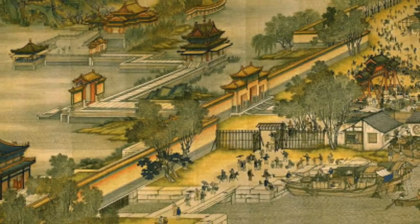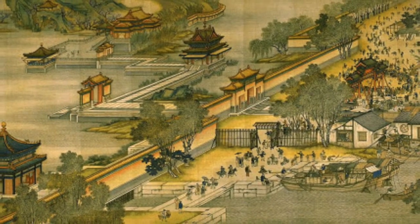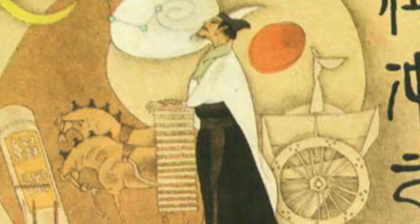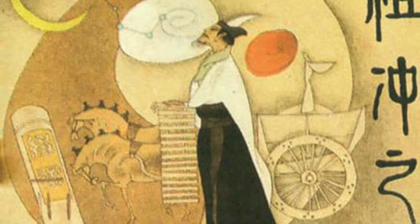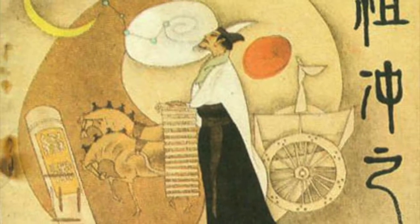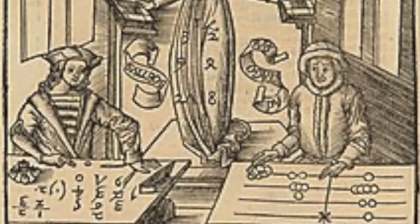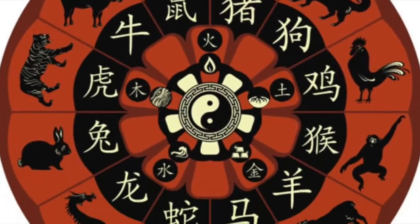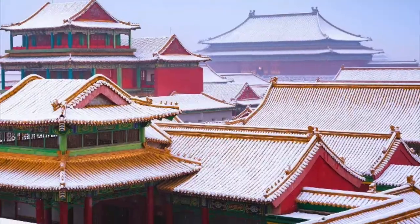The first thing to understand about ancient Chinese mathematics is the way in which it differs from Greek mathematics. Unlike Greek mathematics, there is no axiomatic development; the Chinese concept of mathematical proof is radically different. One must marvel at the Chinese approach to mathematics and the results to which it led. Chinese mathematics was, like their language, very concise — very much problem-based, motivated by problems of the calendar, trade, land measurement, architecture, government records, and taxes.